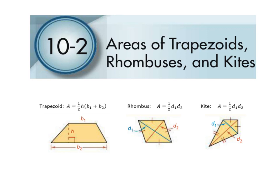Now we look at trapezoids, rhombuses, and kites — each with its own formula. The trapezoid formula is one-half times height times the sum of the two bases, where height is always perpendicular to the bases. A rhombus and a kite share the same formula: one-half times d1 times d2, the product of the diagonals. Note that the diagonals are perpendicular, which creates right triangles we'll use later.